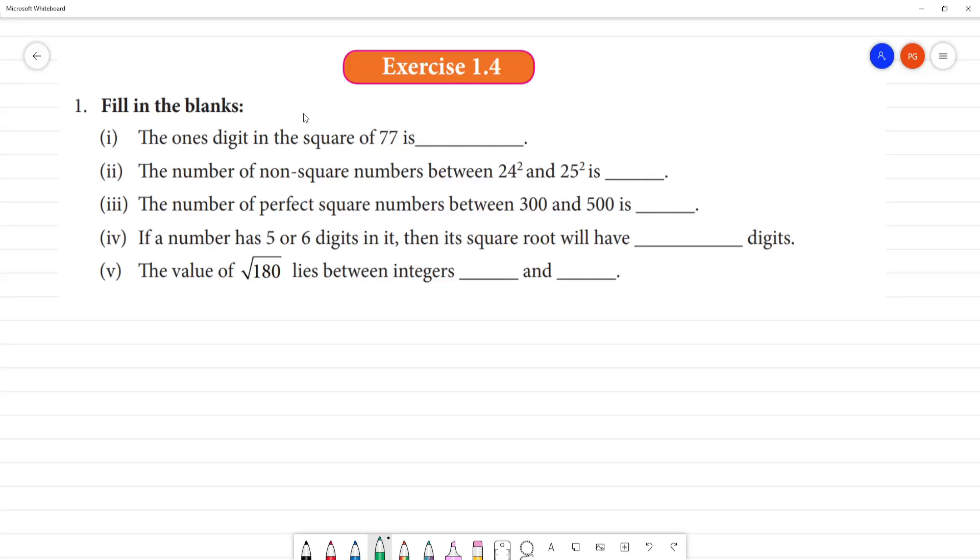In exercise 1.4, filling the blanks path. First one, the ones digit in the square of 77. I mean, if 77 is squared, we will take the ones digit in the unit digit in the square of 77. So, first question.